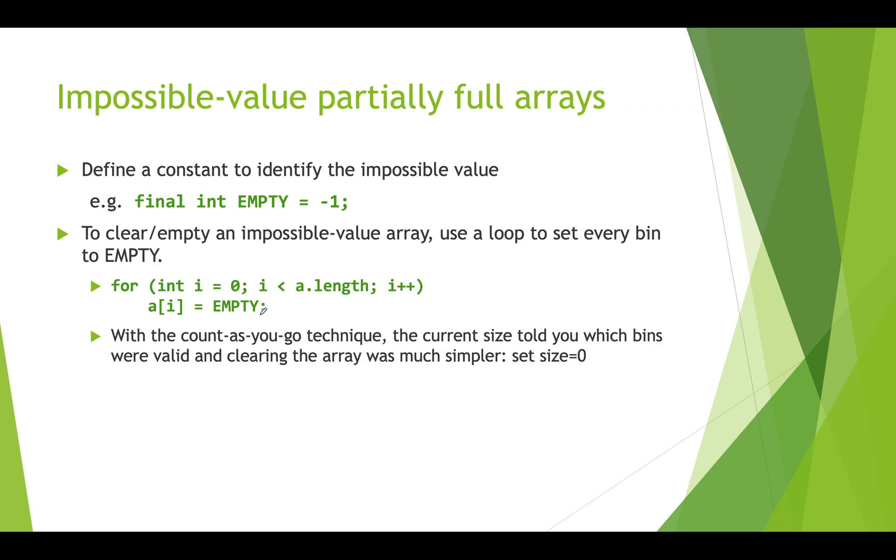So this is a little bit different from what we've done before with our partially filled arrays where we kept a counter for where the next empty slot was. In that technique, if we wanted to set the whole array to be empty, we would just set the size to 0. So that was faster, we didn't have to iterate through and set each value. So there's pros and cons to using this version, the impossible value version of partially full arrays.